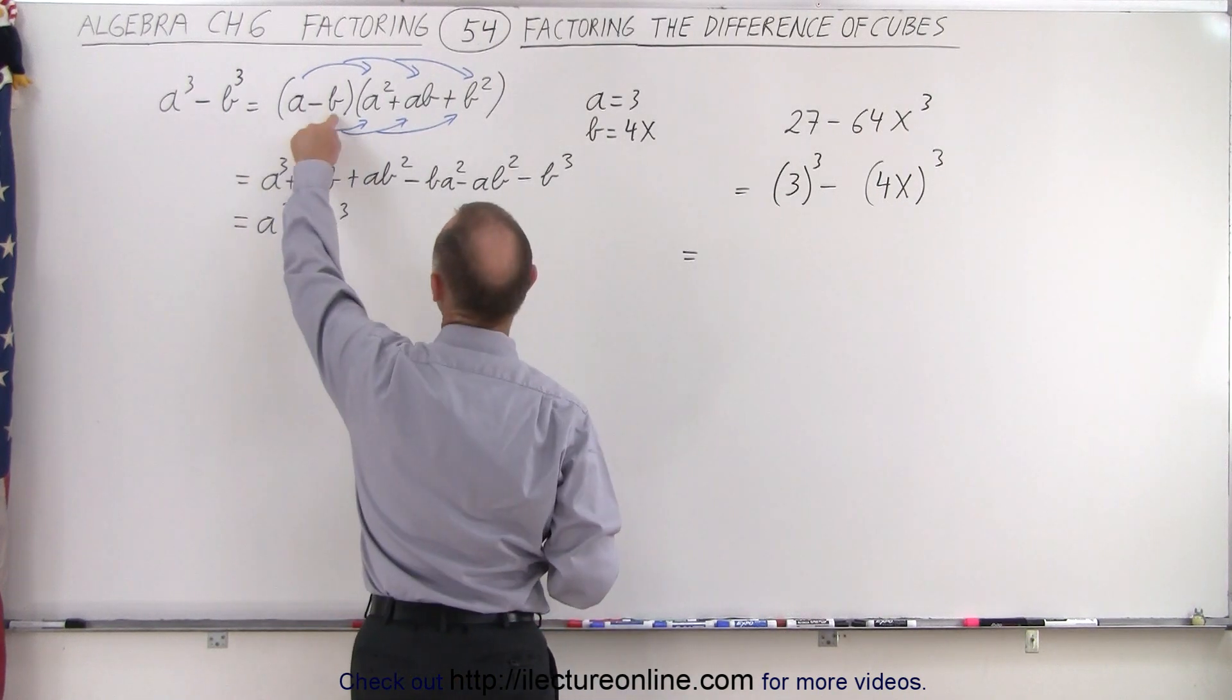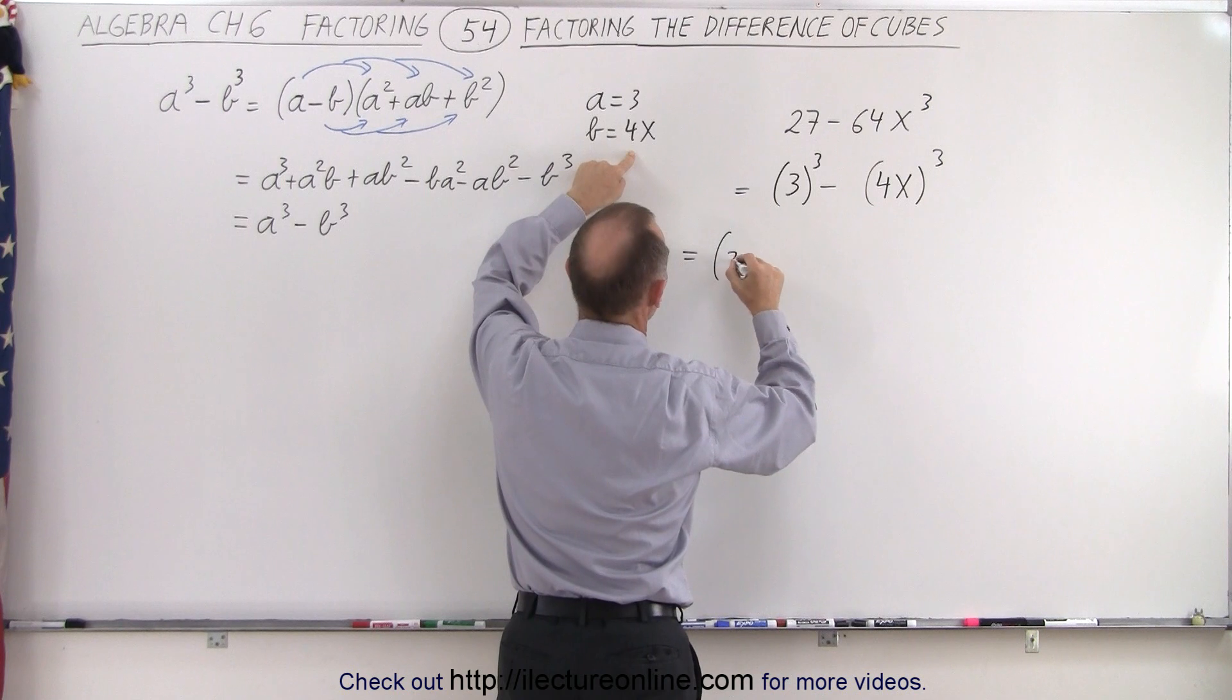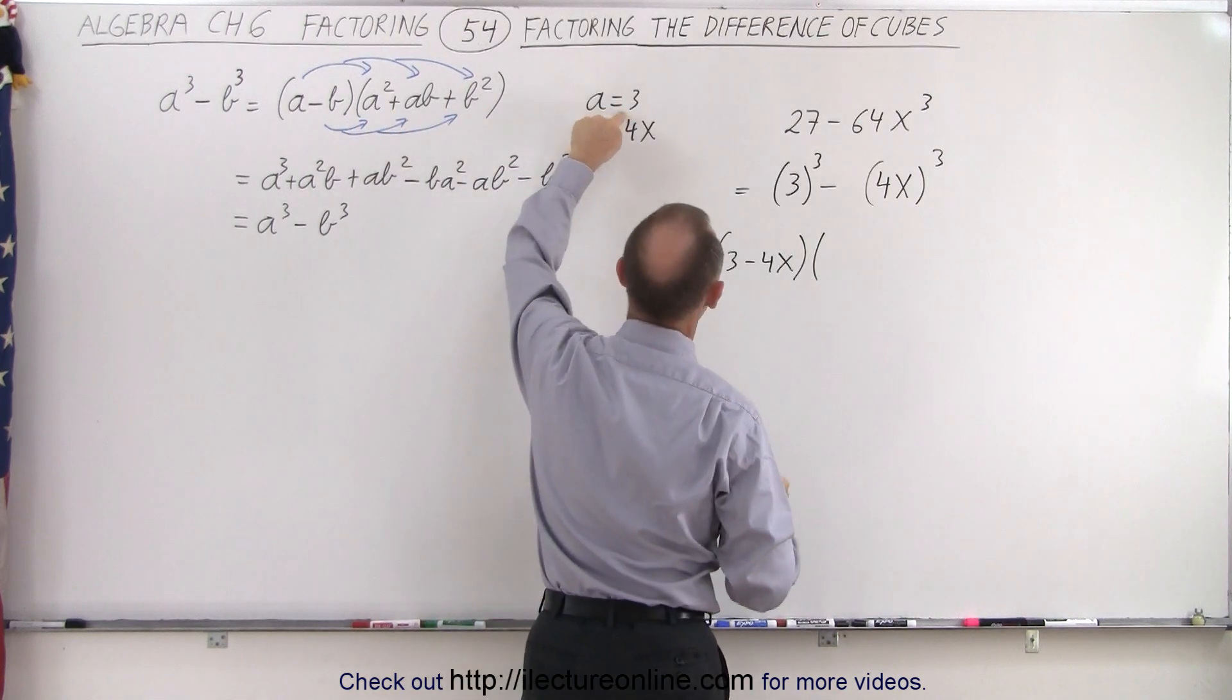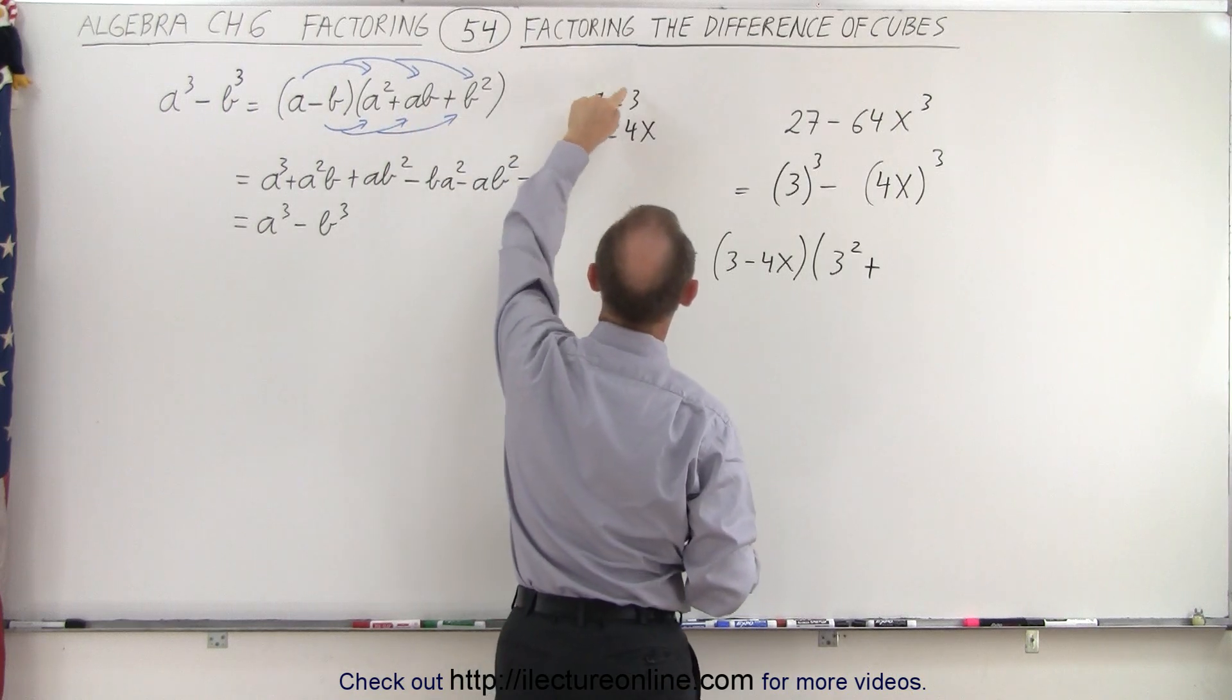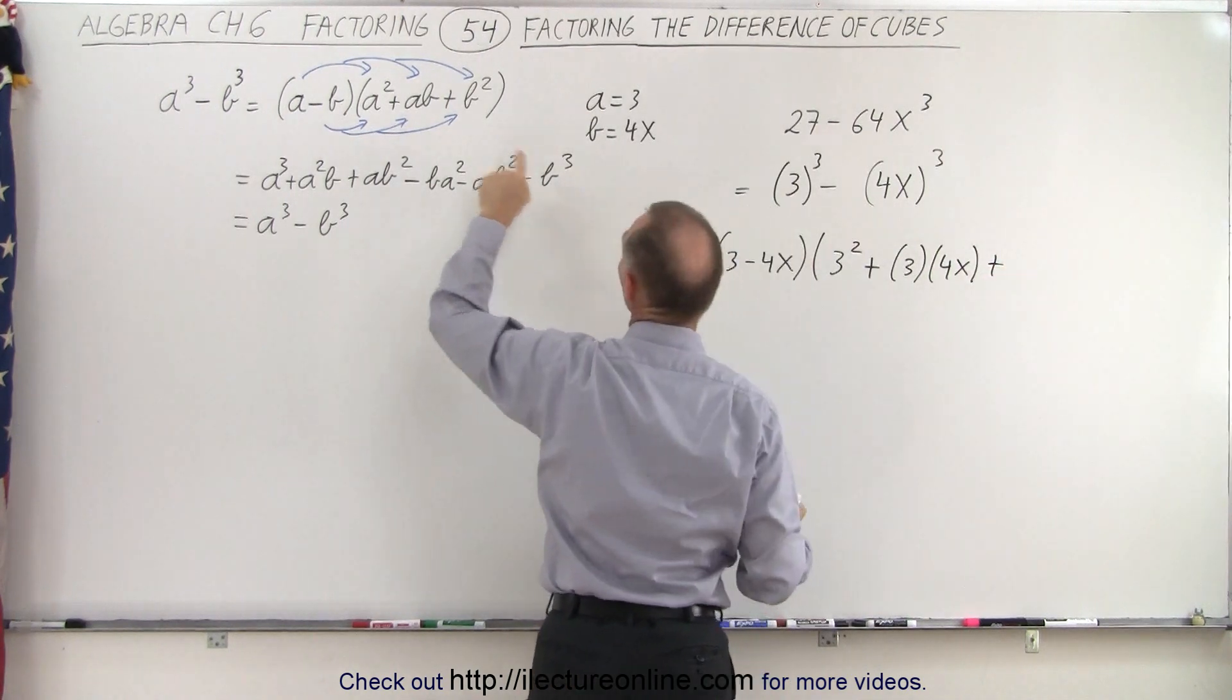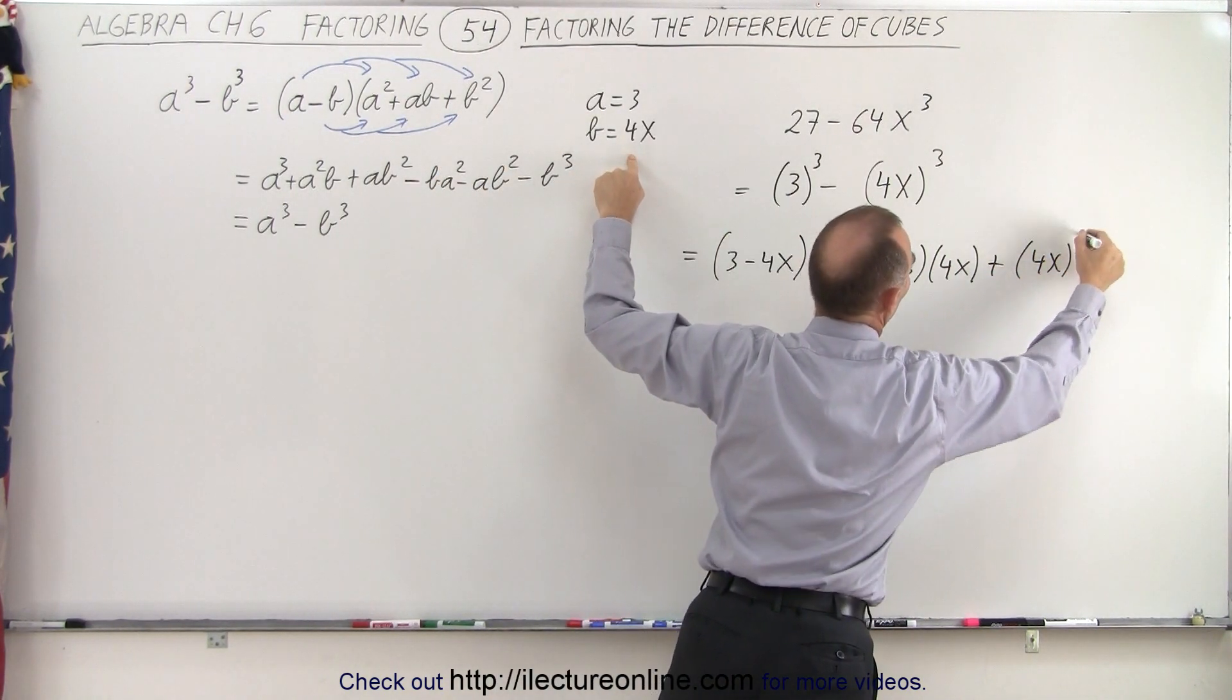So first we need a minus b. Since a is 3 and b is 4x, we write 3 minus 4x. And then we multiply that times a squared, but since a is 3, we write 3 squared plus a times b, that would be 3 times 4x, and plus at the end we have b squared, that would be the quantity 4x squared.